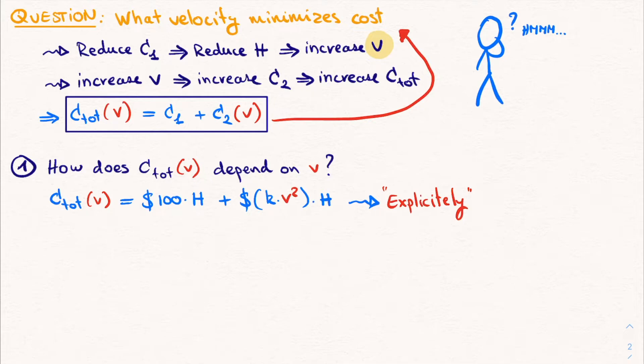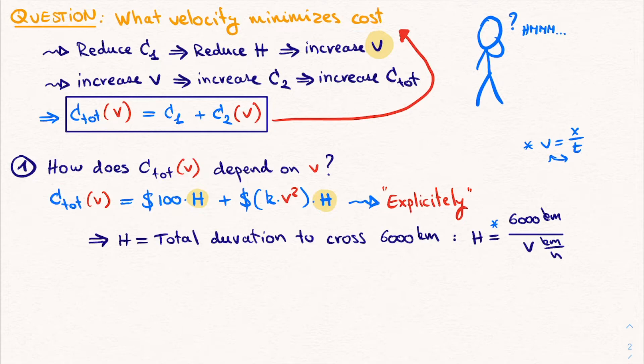Now what we did here is write down the components of the total cost, which explicitly depend on V. Now this expression of the total cost still depends on this variable capital H. The total amount of hours it takes to make the journey. Now this might not seem to depend on V, but obviously it does. Because if we just travel faster, then the total number of hours to complete the journey will decrease and vice versa. Therefore, we still want to write this capital H as a function of the velocity V. Because only then will we have an expression for our total cost, C_total, as a function of V. Now this rewriting of H as a function of V, the velocity, can be done quite easily. Because we know that H is the total duration to cross 6000 kilometers, we can simply write that capital H is equal to 6000 kilometers divided by V kilometers per hour. Which is of course simply rewriting the standard formula for velocity, V is equal to X divided by T, such that we have an expression for H.